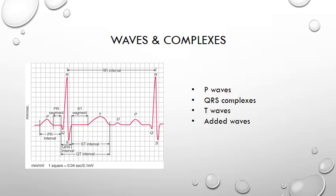T waves: are they inverted? Are they peaked? Or even hyperacute? Are they concordant — in other words, in the same direction — or discordant, opposite direction, to the QRS complex? Look for added waves too. Are there any delta waves? That's where you get upsloping of the initial R wave. Or are there any U waves present? You'll usually find those just after the T wave, as you can see in the diagram here.